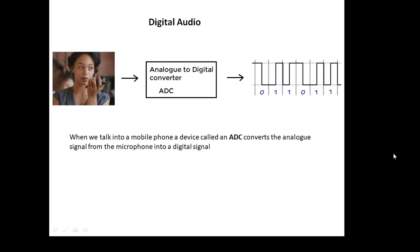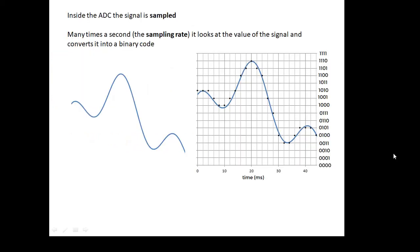Now, when we talk into a mobile phone, that's an analog signal which has to be changed into a digital one. And there's a device called an ADC, an analog to digital converter, which does that. It converts an analog signal from the microphone into a digital signal. And the process is called sampling.